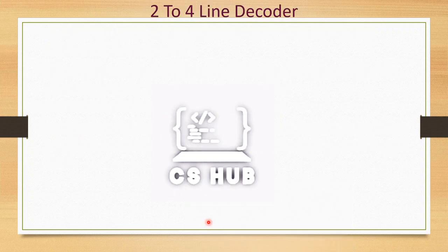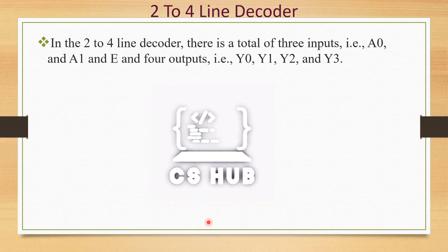Let's look at an example: the 2-to-4 line decoder. In the 2-to-4 line decoder, there are a total of 3 inputs — two data inputs A0 and A1, and one enable input E. There are 4 output lines.